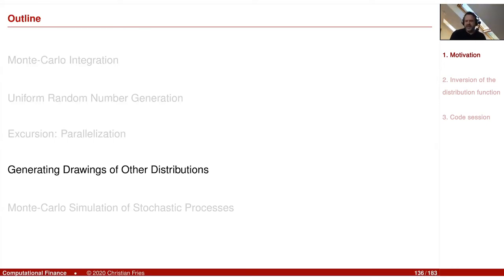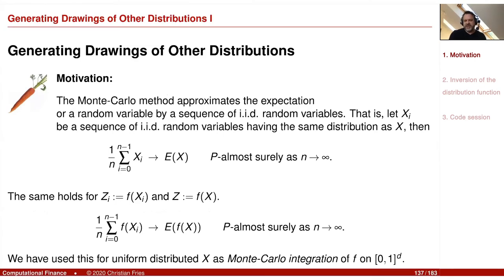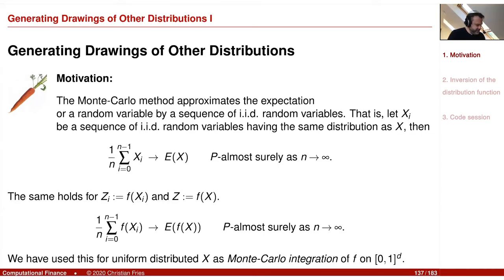I would like to start this section with some motivation — a small recap of some applications in mathematical finance, which we will use to demonstrate the methods. The Monte Carlo method, which we discussed so far, approximates an expectation by a sequence of IID random variables.